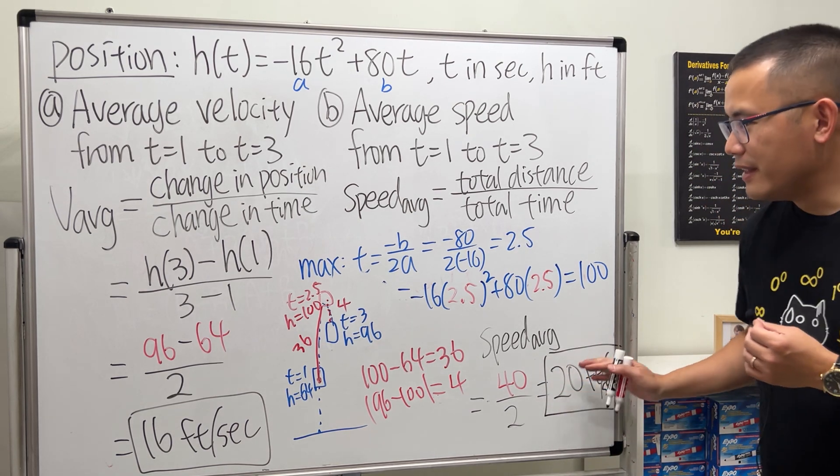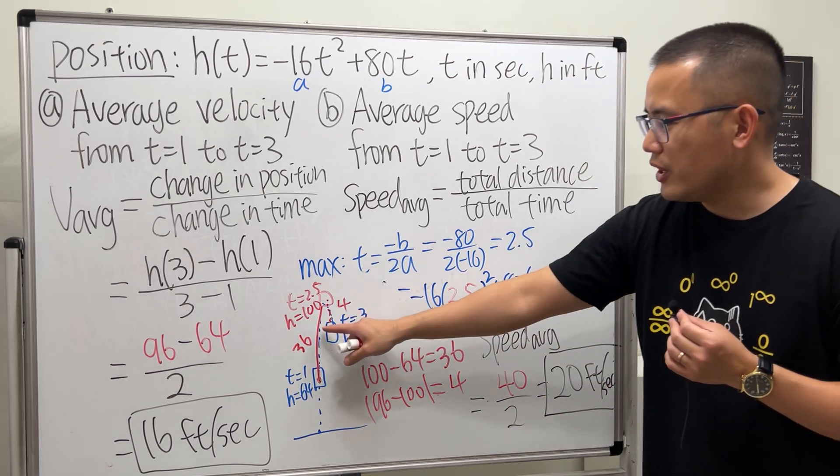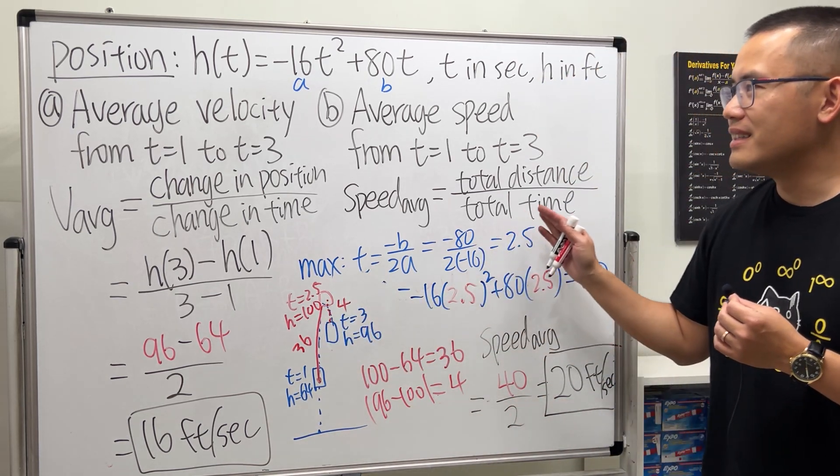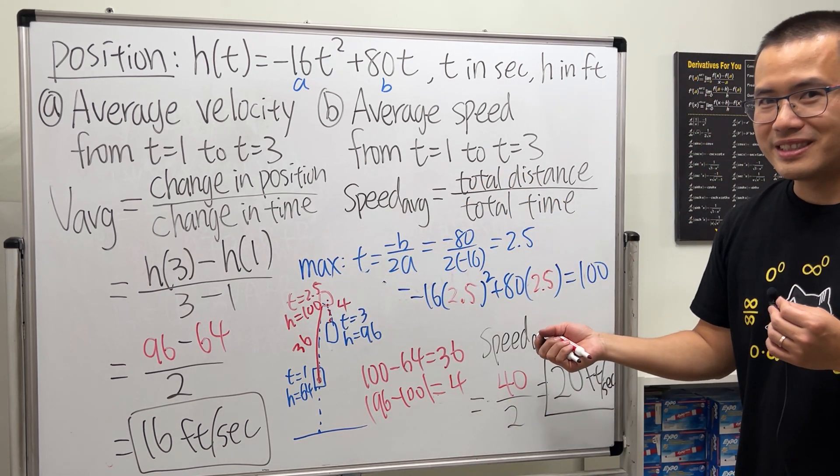So they are quite different. Especially if there is a change in direction, then the average speed will be different than the average velocity, and this is how you do it.